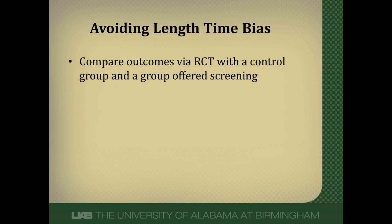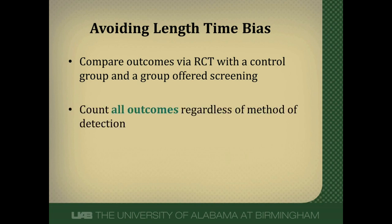So how do we avoid this? We want to do a randomized control trial of screening versus a control group, like we'd like to see in all screening studies. But importantly, we count all outcomes regardless of the method of their detection — whether they're screen detected or detected by regular diagnostic means in the control group and the screening group — and then we compare those numbers. I hope this video has helped you understand what length-time bias is and, importantly, how it can be prevented.